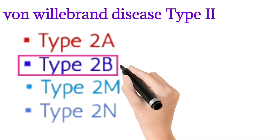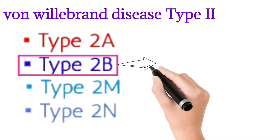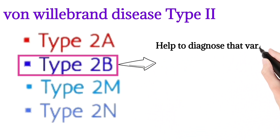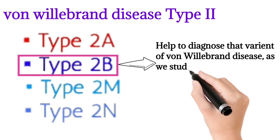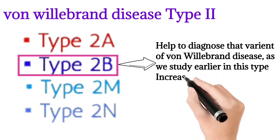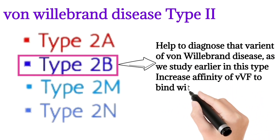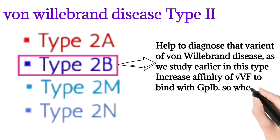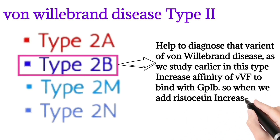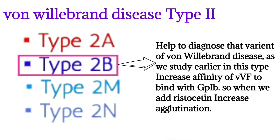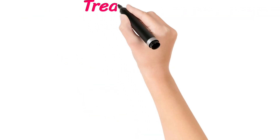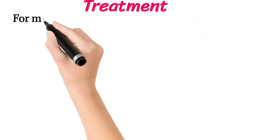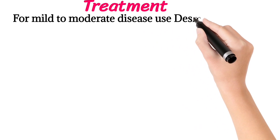In Type 2b, ristocetin helps diagnose that variant of von Willebrand disease. As discussed, this type has increased affinity of von Willebrand factor to bind with glycoprotein 1b, so lower doses of ristocetin are needed to induce agglutination. For mild to moderate disease, treatment uses desmopressin.